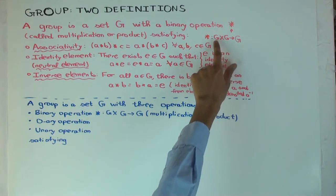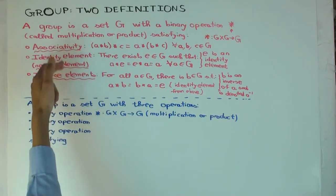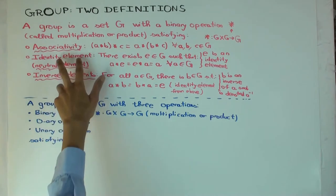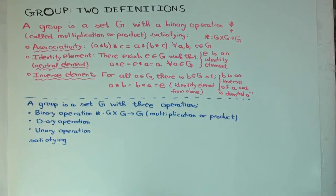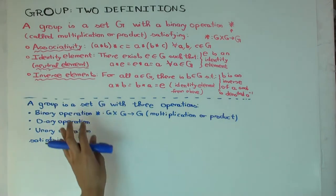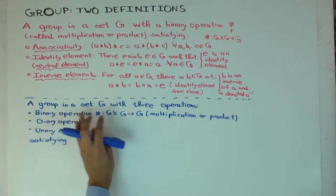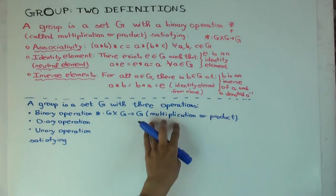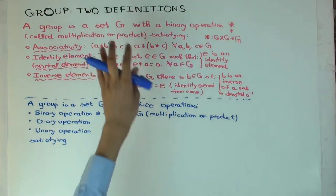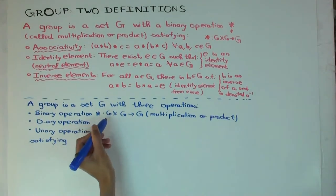What I want to do now is define new operations which capture the identity elements and the inverses. I have postulated their existence, but now I want to include these also in the group structure. So I define a group as a set with three operations: the binary operation — the same one as before, which is just a multiplication in the group, not necessarily related to multiplication of real numbers.